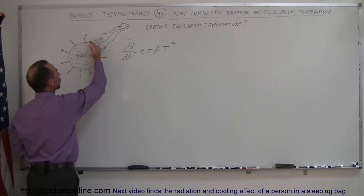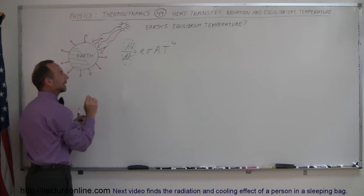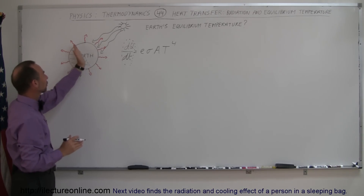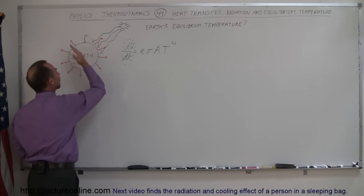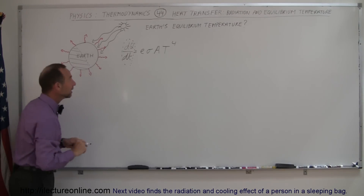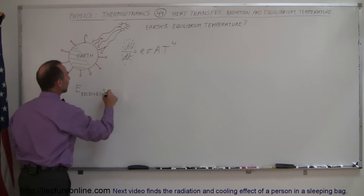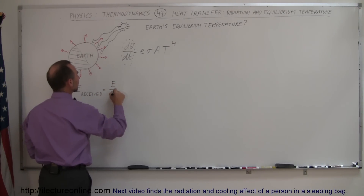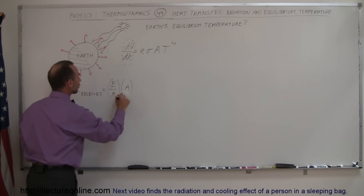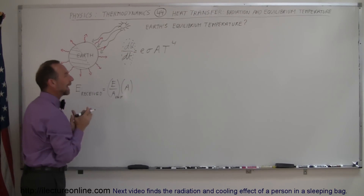The portions of the Earth pointing directly at the Sun receive a lot more energy than portions on the side that receive only a little. But we can average it out. We can assume that if we were to cut the Earth open, all the energy received on that flat cross-sectional surface would be the same as distributed over a semi-sphere. So the total energy received from the Sun equals the energy per unit area times the cross-sectional area.